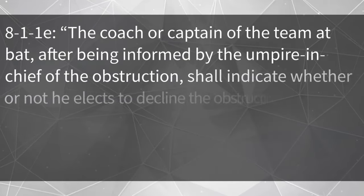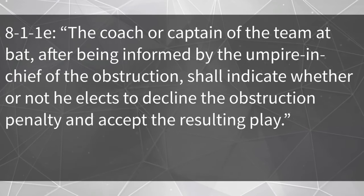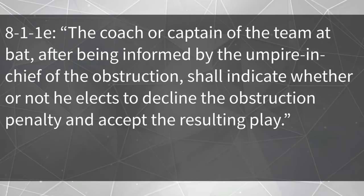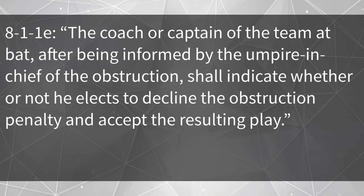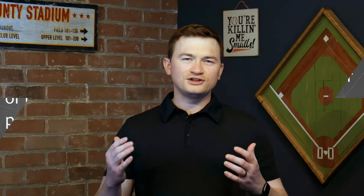Now let's discuss the hardest part of the rule. Rule 8-1-1e states: the coach or captain of the team at bat, after being informed by the umpire in chief of the obstruction, shall indicate whether or not he elects to decline the obstruction penalty and accept the resulting play. Note that this doesn't say they must choose to accept the penalty — instead, they have to decline the penalty. This is the same as at other levels of baseball, and the instruction gives you this guidance: before the coach has any input, we must first enforce the catcher's obstruction, then the coach can elect to take the result of the play.